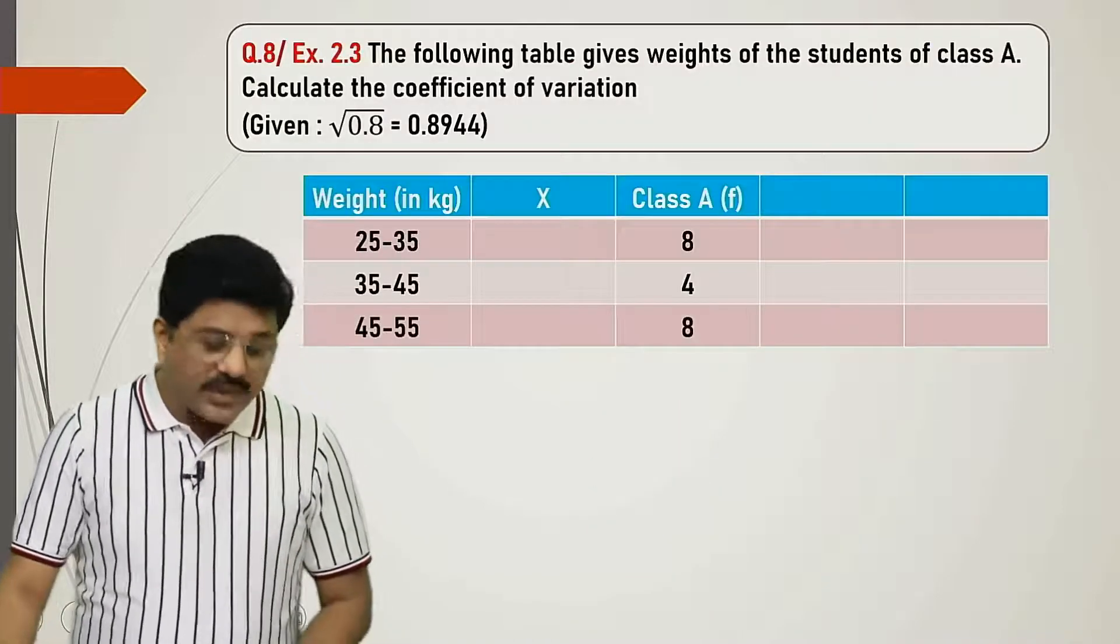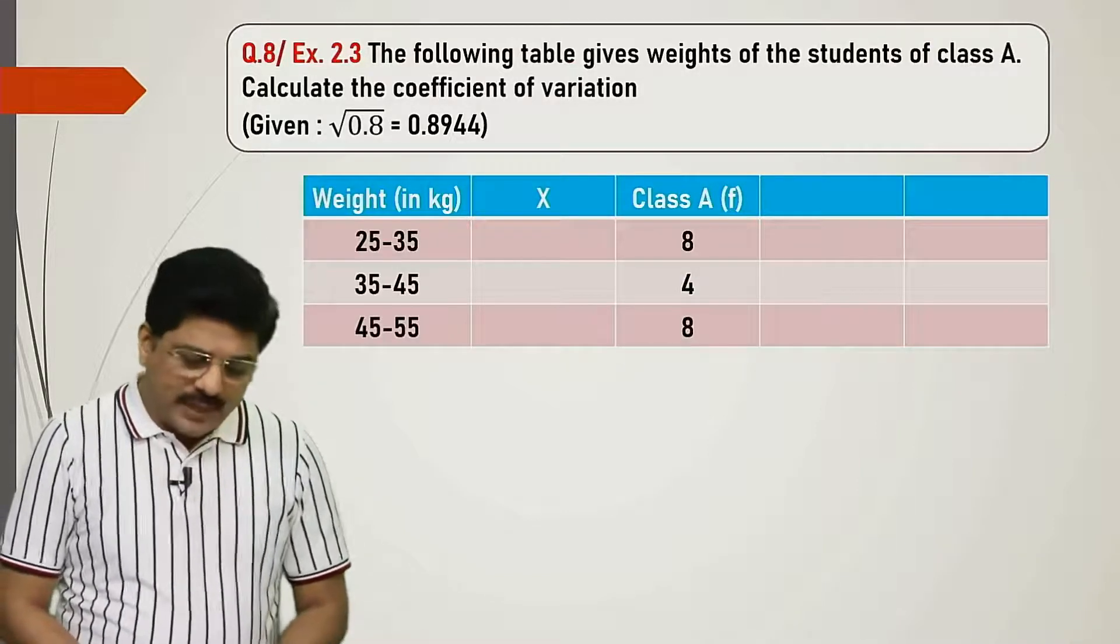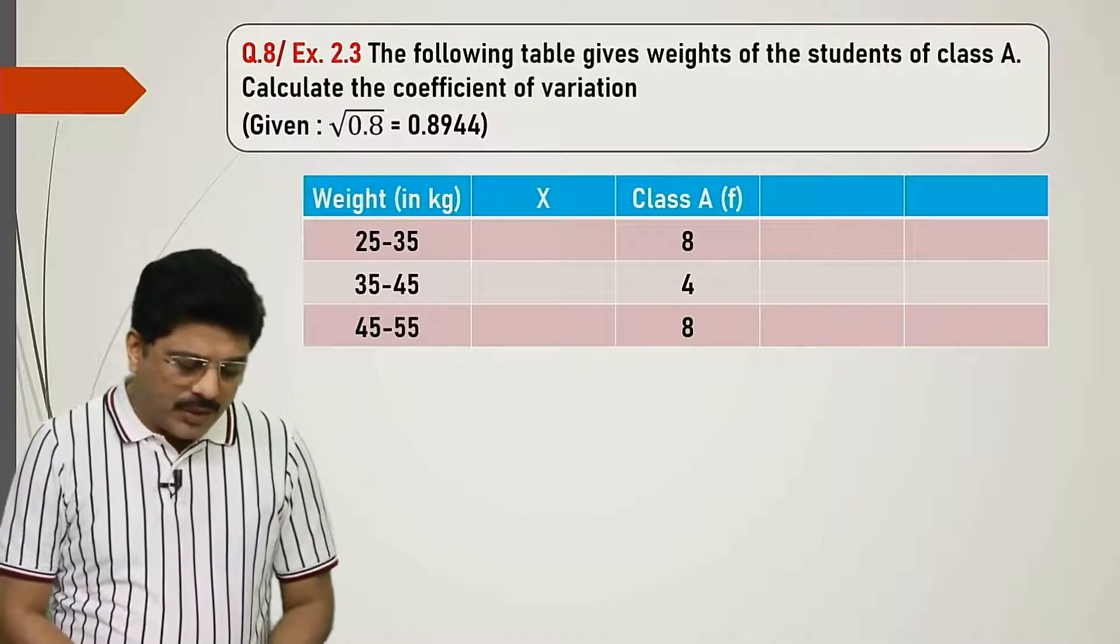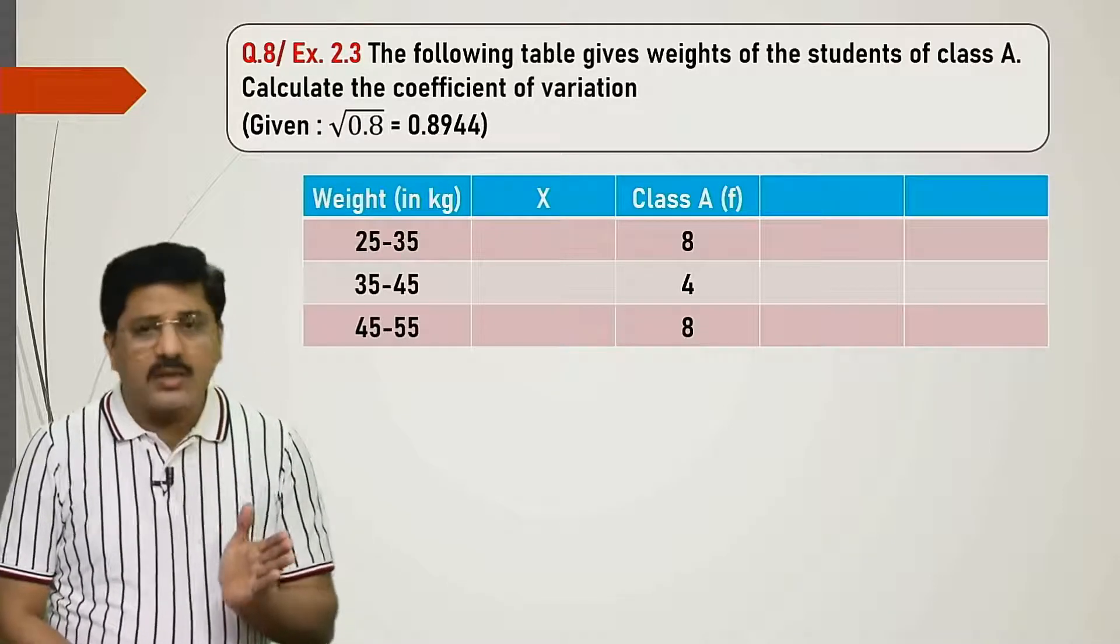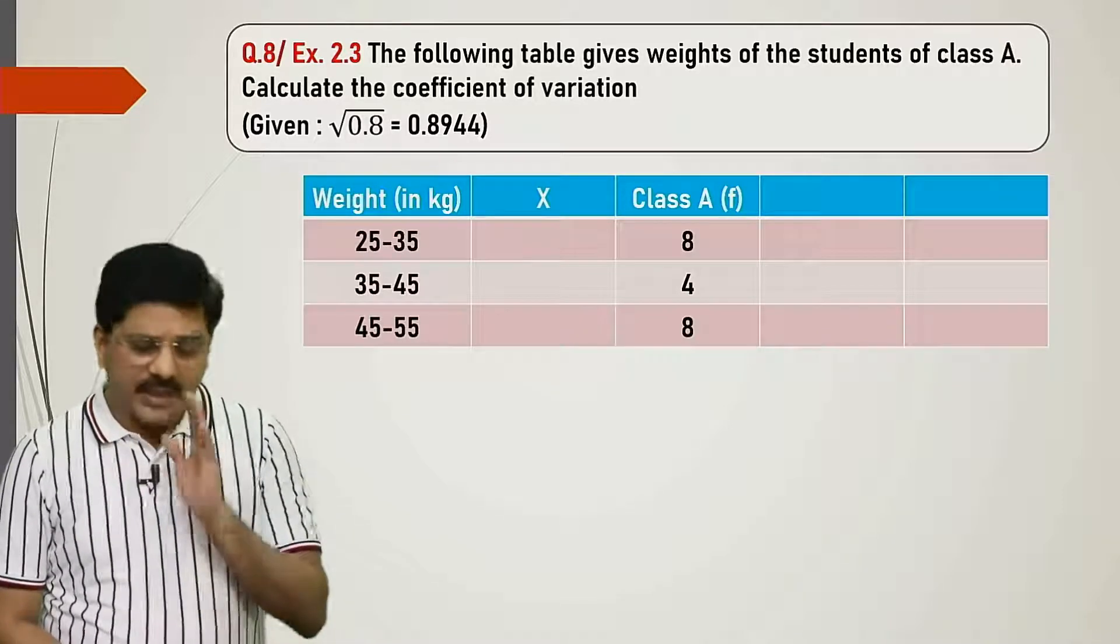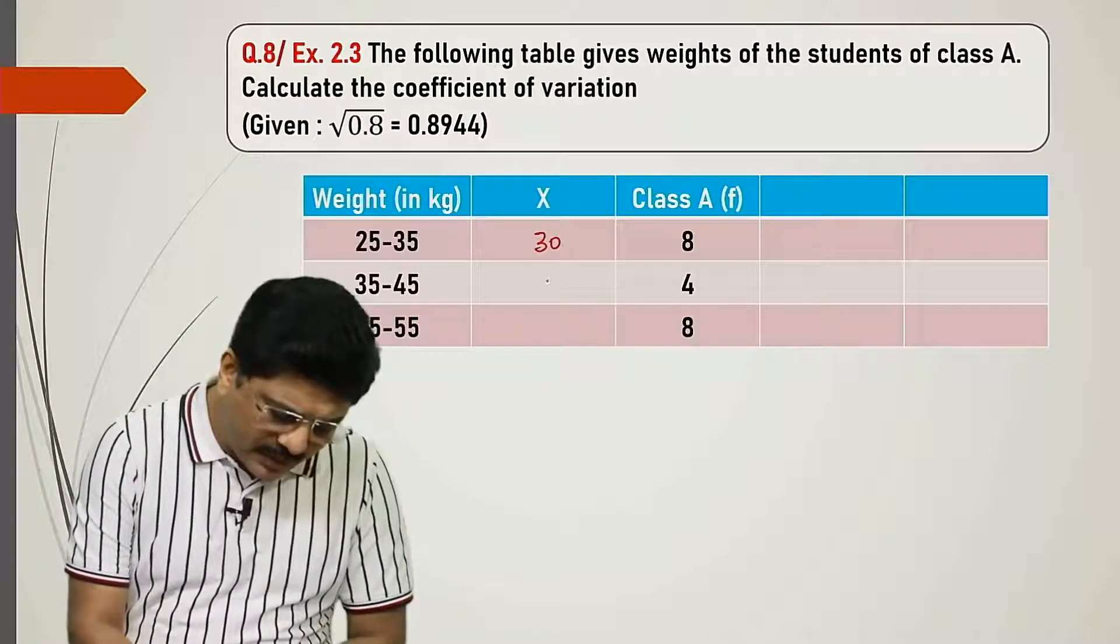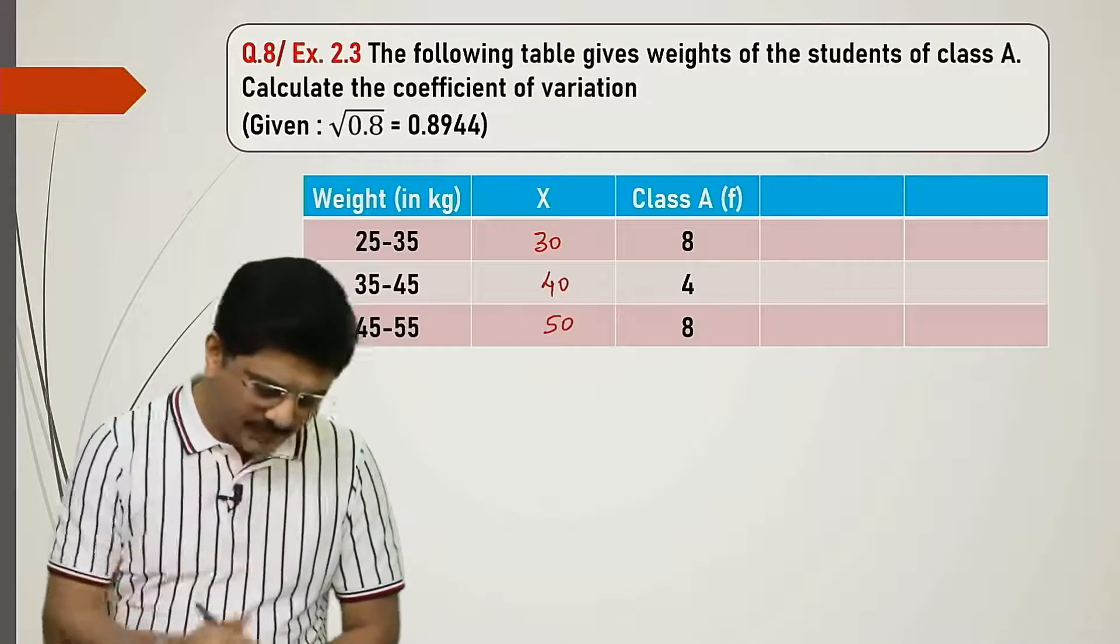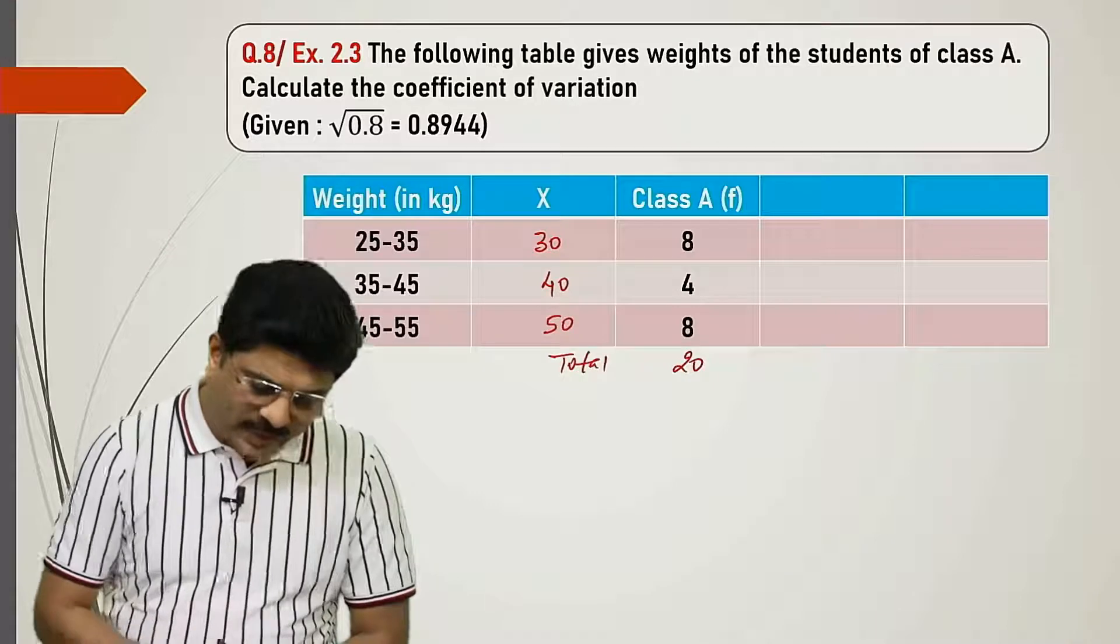Alright, question number 8. Following table gives weights of students of class A. Calculate CV. In the data we have weight given and frequency given. I've added an x column. We need to take class marks: 30, 40, and 50. Total frequency is 20.